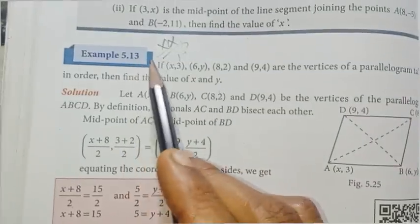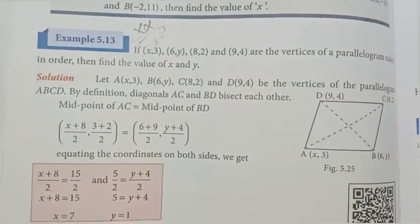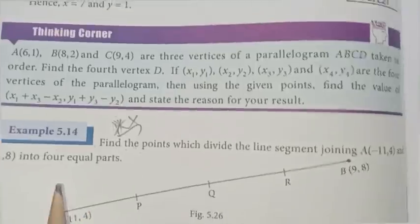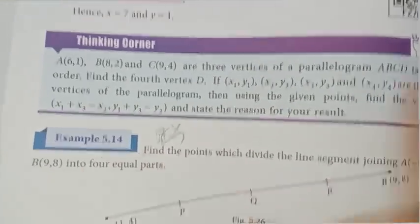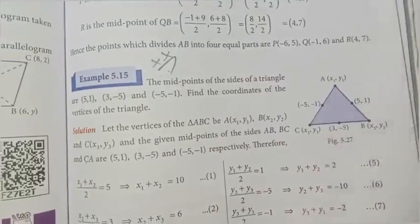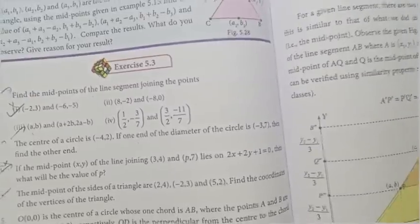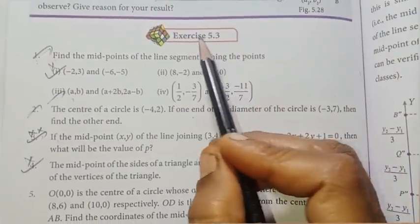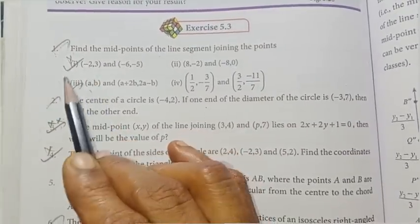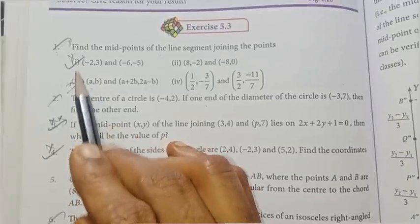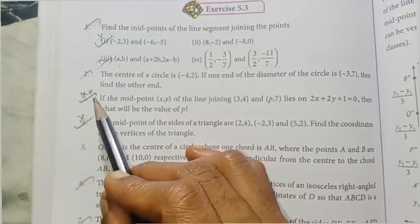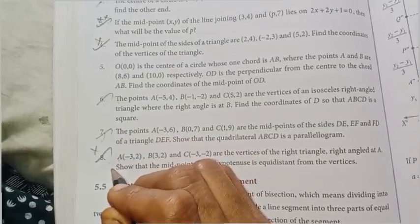Page 205, Example 5.12 is an important question. Example 5.14 is important. Example 5.15 is repeated and important — page 208. In Exercise 5.3, the 1st and 3rd questions are important, the 2nd is repeated, the 4th, 6th, 7th are important, and the 8th is repeated.